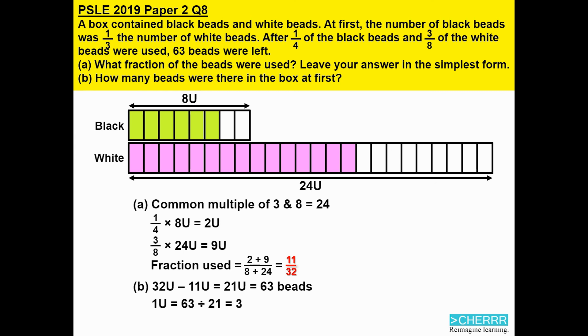Total beads at first is actually 32 units, so 32 multiplied by 3 will get us 96.